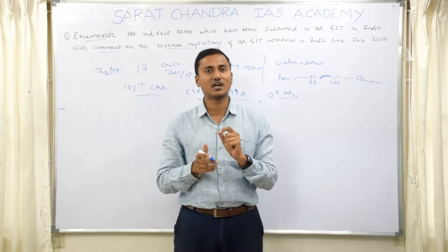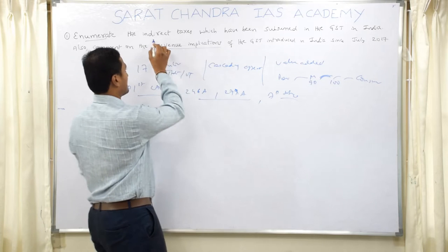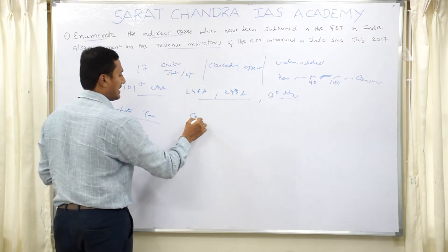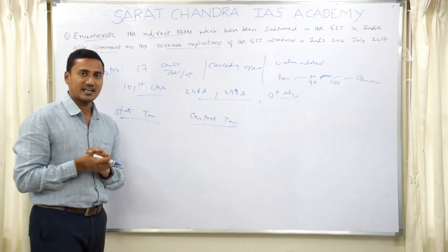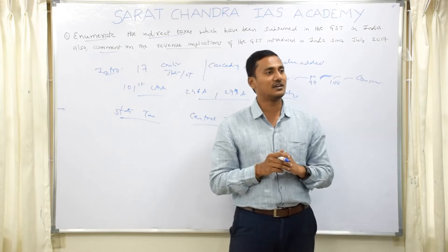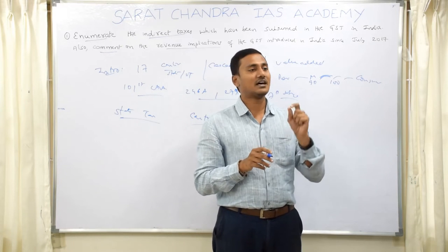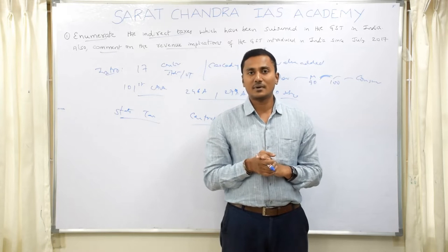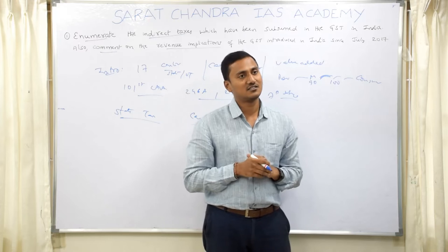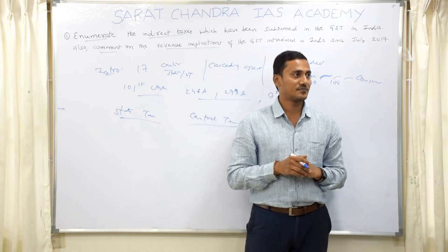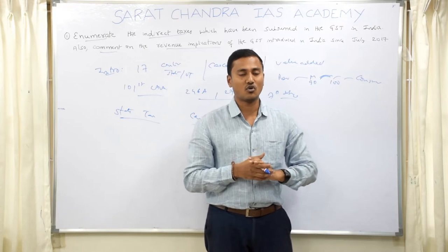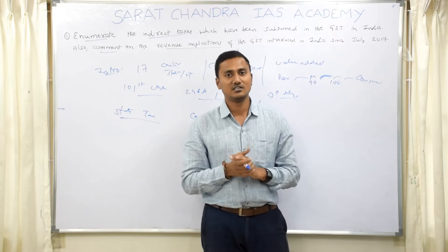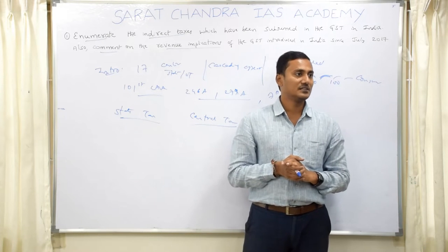After the introduction of 3 to 4 lines, come directly to enumerating the indirect taxes — both at the state and central level. At the state government level, taxes like State VAT (Value Added Tax), sales tax, entertainment tax (not that imposed by local bodies but the state government's entertainment tax), entry tax, octroi tax, purchase tax, luxury tax, and taxes on lottery, betting, and gambling — all these previously under state governments are now brought under GST.